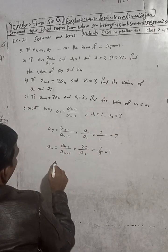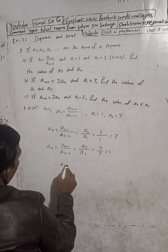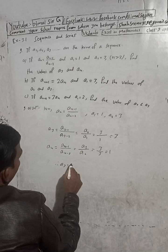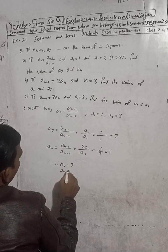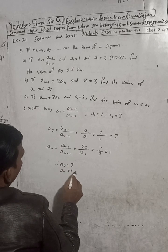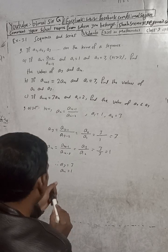So our answer is: a3 is equal to 3 and a4 is equal to 1.